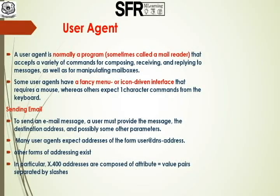Next, we are going to see about user agent. User agent is nothing but a program that is used to accept a variety of commands for composition, receiving, replying, etc. It is just a user interactive editor. Some user agents have a fancy menu and some have an icon-driven based interface. Some require a mouse and some require a keyboard. The main functionality of user agent is sending and reading mail. To send an email, a user must provide the message, the destination address, and also some other parameters. Many user agents accept the addresses in the form of user@domain. We all know that our mail ID is in the form of mailid@gmail.com or mailid@yahoo.com, etc. All mail IDs must follow this format, though other forms of addressing also exist.